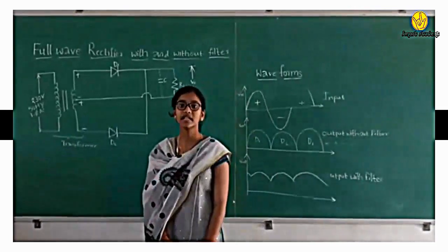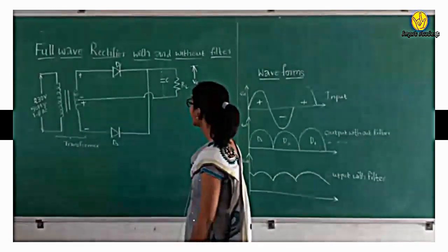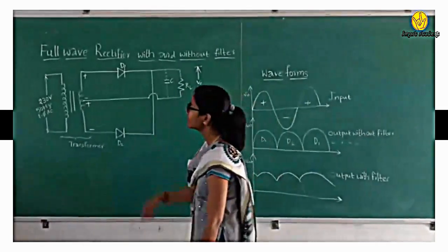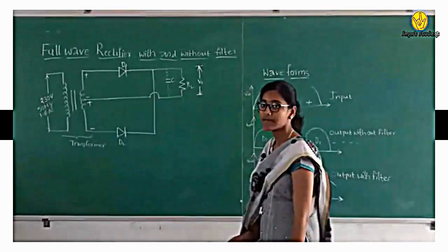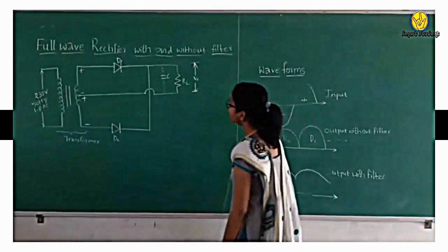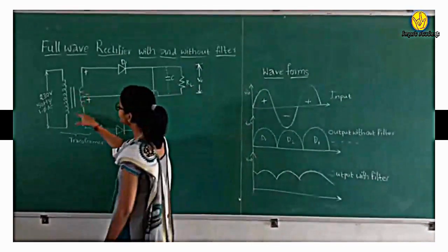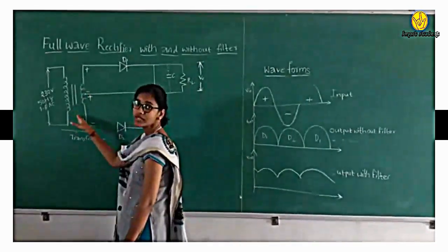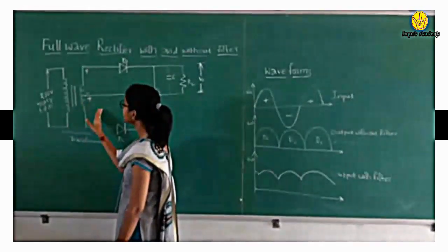To learn how a full wave rectifier works, let us now go into the working of it. As an input we give an AC supply, single phase AC supply. A single phase AC supply is shown in this waveform. When a positive peak is given to this transformer, due to the mutual induction principle, the same signal appears across the second winding of the transformer.